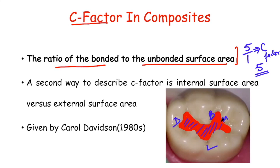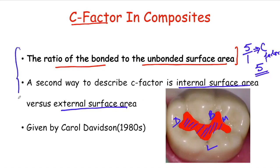We can also say that C factor is the ratio of internal surface area versus external surface area. In class 1 cavity, the internal surface area is bounded by all 5 walls, and the external surface area of the composite is marked by the occlusal surface. The concept of configuration factor was given by Carol Davidson in 1980.